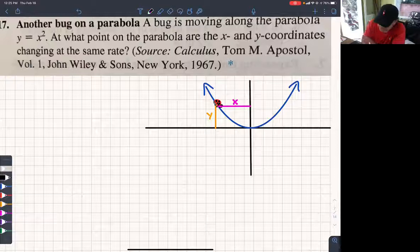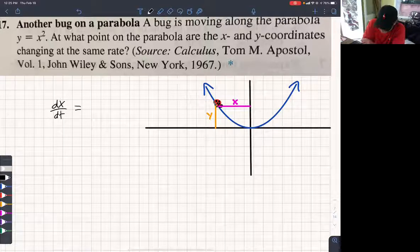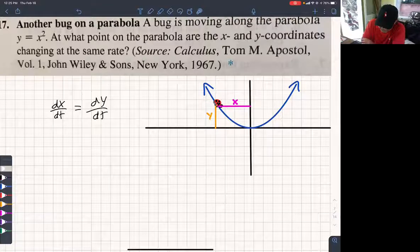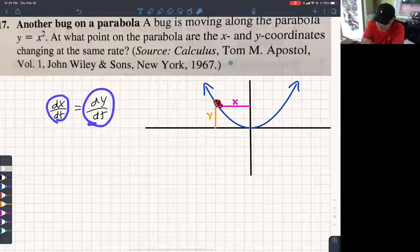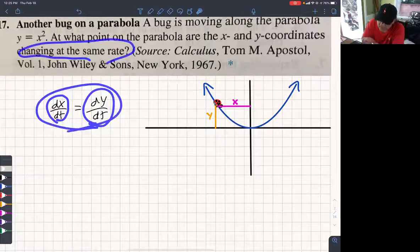So they want to know at what point are the x and y coordinates changing at the same rate? Because as it moves, both of those changes. So they want to know when dx/dt equals dy/dt. So this is how fast x is changing, this is how fast y is changing. So they're changing at the same rate, you want them equal to each other.